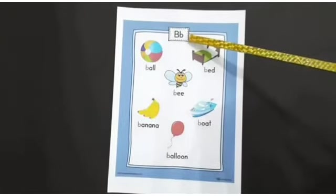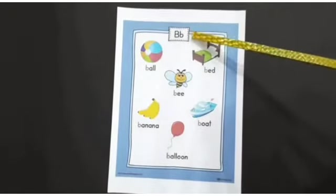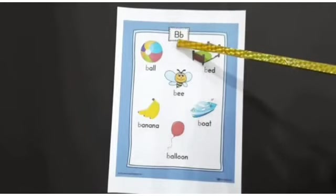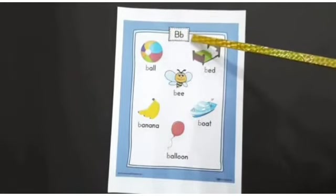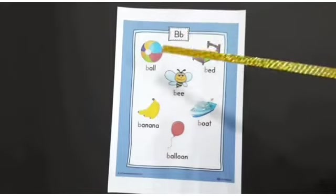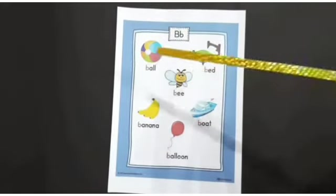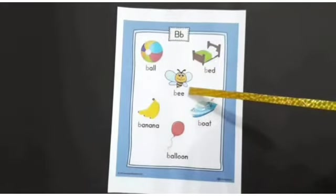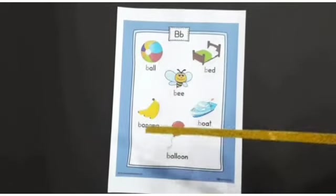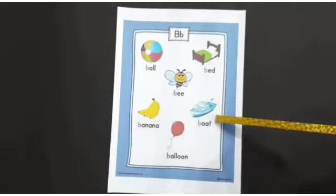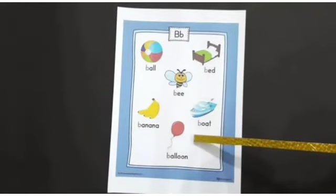Alphabet B. Capital B, small b. B says B. B for ball, B for bee, B for bed, B for banana, B for boat, B for balloon.